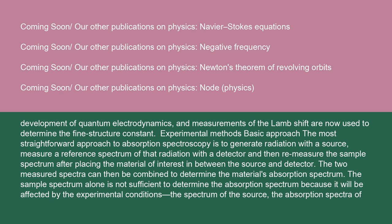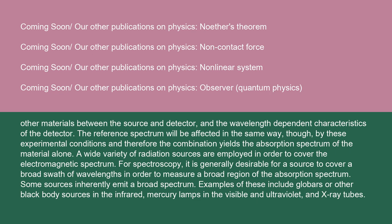The most straightforward approach to absorption spectroscopy is to generate radiation with a source, measure a reference spectrum of that radiation with a detector, and then re-measure the sample spectrum after placing the material of interest in between the source and detector. The two measured spectra can then be combined to determine the material's absorption spectrum. The sample spectrum alone is not sufficient because it will be affected by the experimental conditions, the spectrum of the source, the absorption spectra of other materials between the source and detector, and the wavelength-dependent characteristics of the detector. The reference spectrum will be affected in the same way, and therefore the combination yields the absorption spectrum of the material alone.